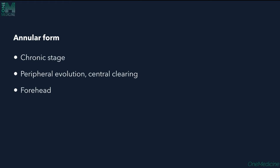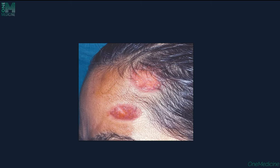The annular form shows central clearing with raised margins, representing a chronic stage, mostly seen on the forehead.